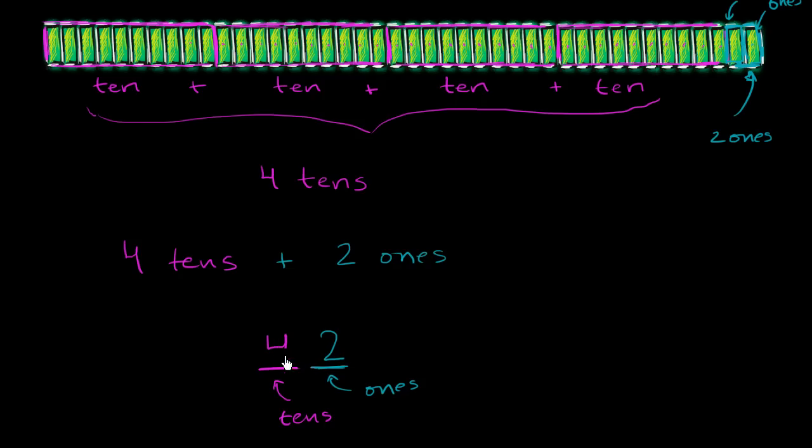We have 4 tens. So we would represent this as 4 tens and 2 ones, and we call this 42. Another way to think about this: 4 tens is 10 plus 10 plus 10 plus 10, which is 40. And then we have 2 ones. So this is 40 plus 2, which reminds us that the 4 represents 4 tens, or 40.